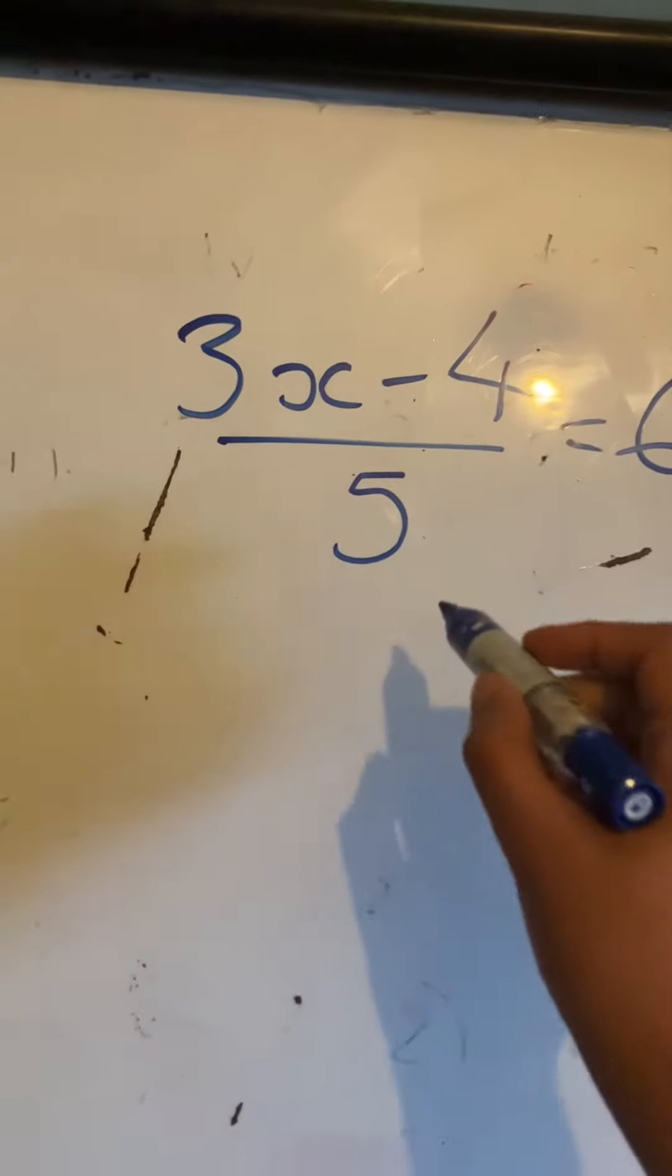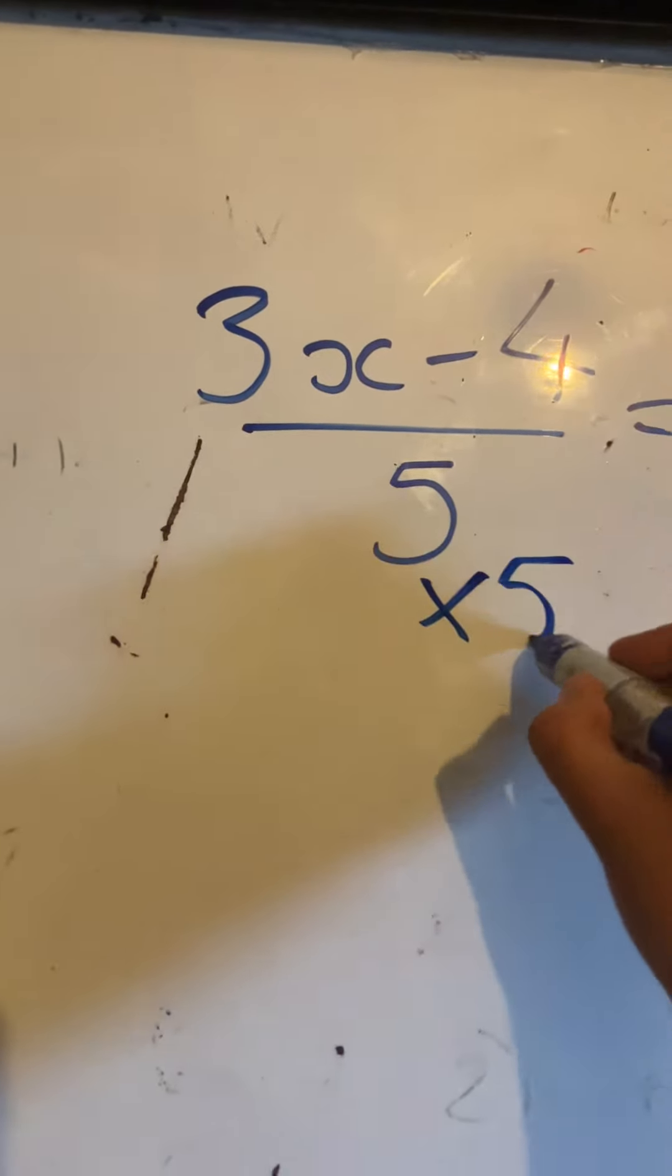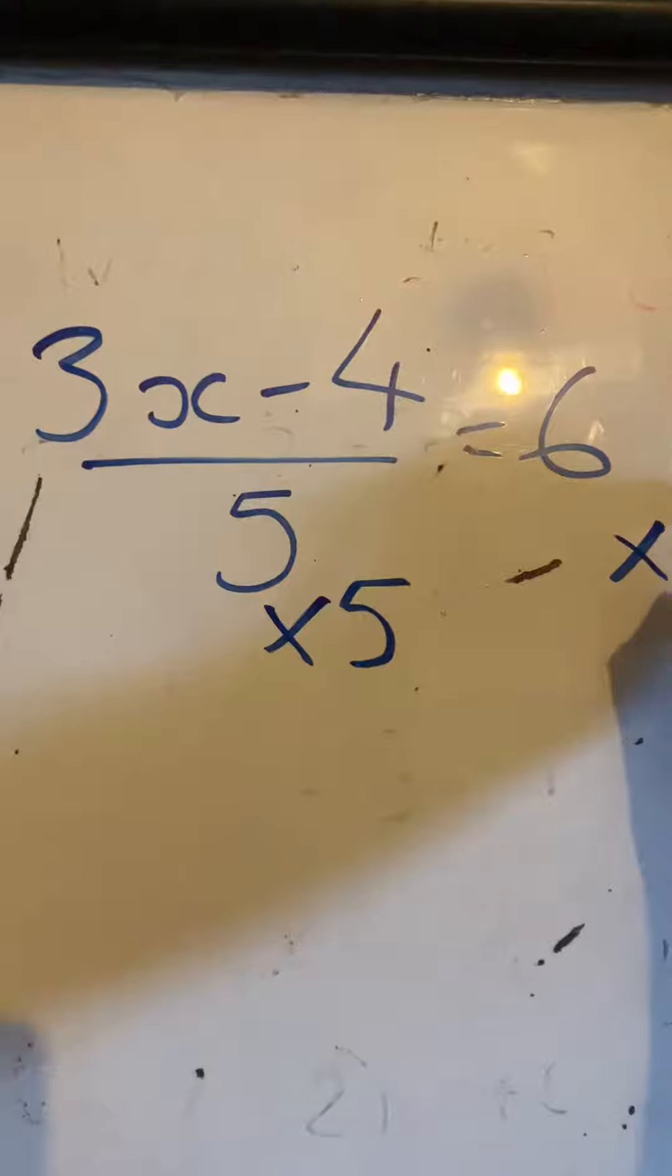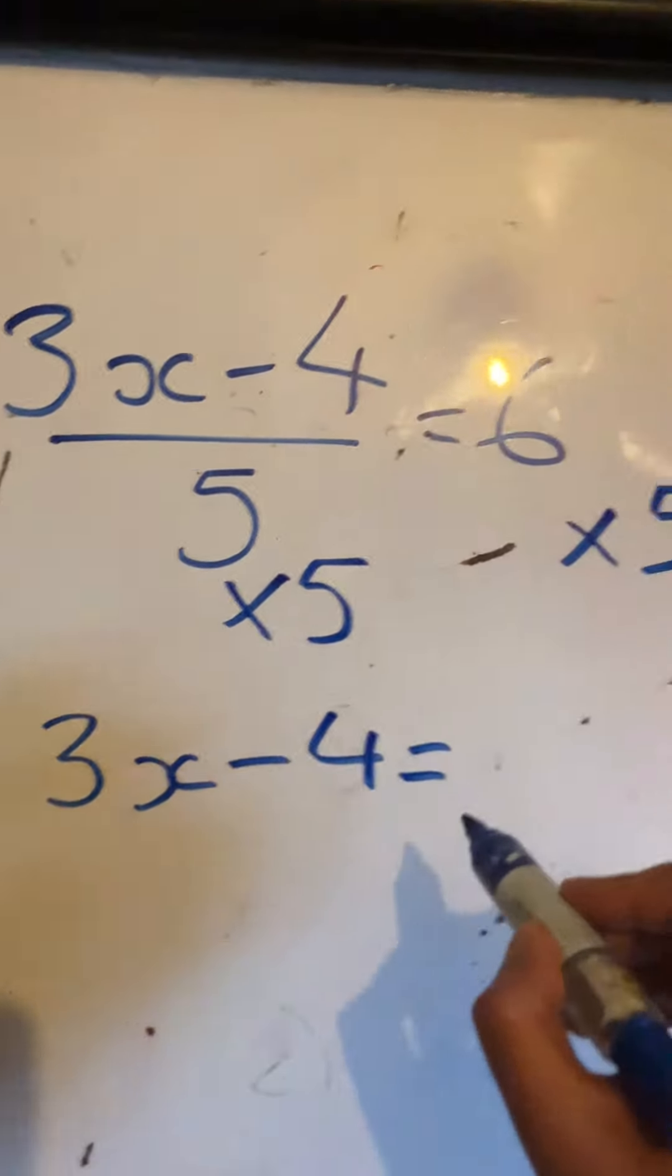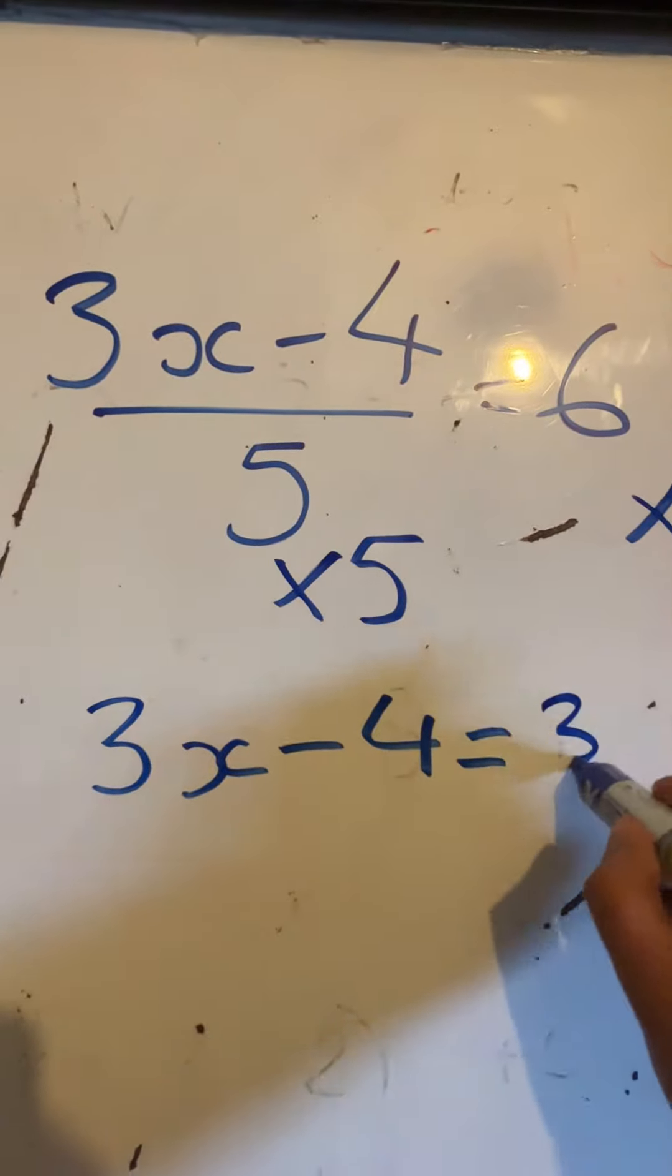So the first step here is to multiply both sides by 5, so we have 3x subtract 4 is equal to 6 times 5 which would be 30.